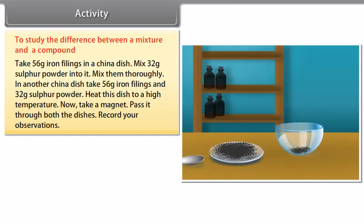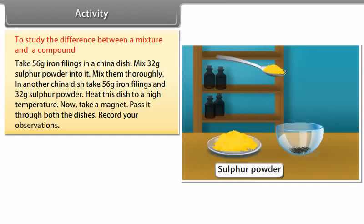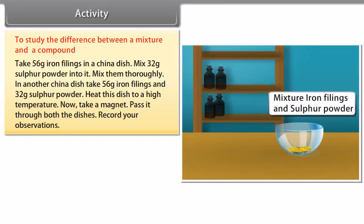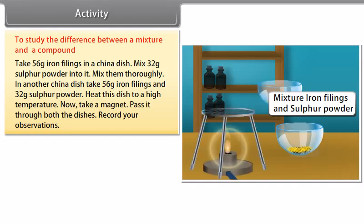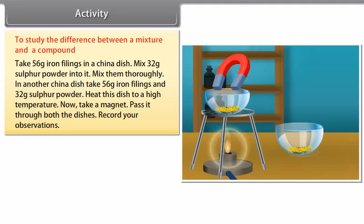When two or more elements or compounds are brought together, they mix without losing their individual properties. These are called mixtures. A mixture may be defined as something containing two or more substances in varying compositions. For example, air is a mixture of several gases — it contains elements such as oxygen and nitrogen, and compounds such as CO₂ and water vapor.